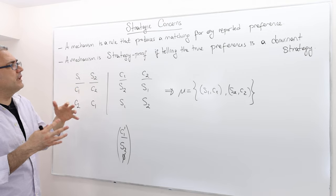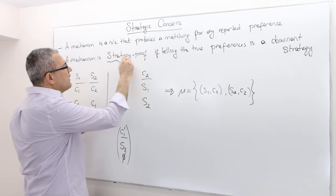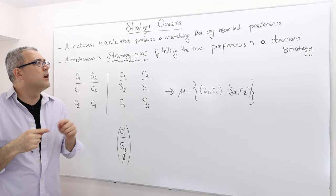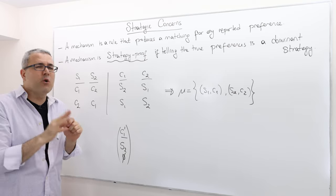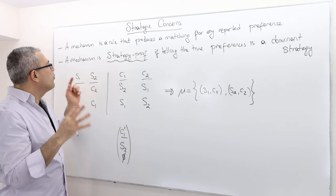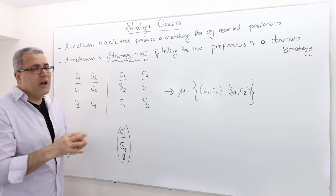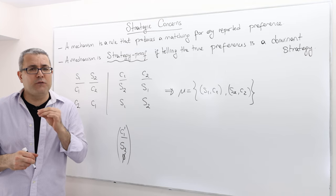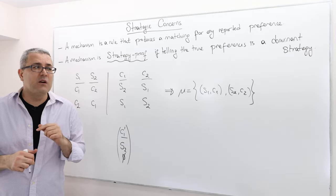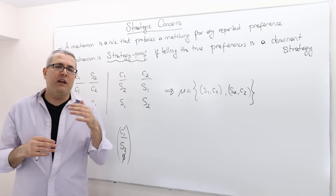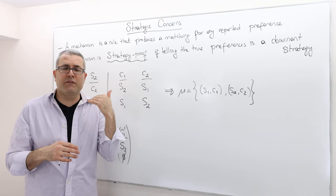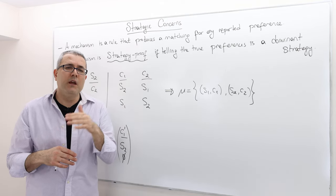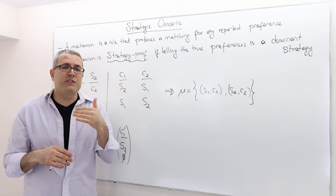A mechanism is strategy-proof — that's a concept we will formally define later when we talk about mechanism design. For now, I'm going to keep it rather informal. We call a mechanism strategy-proof if telling the true preferences is a dominant strategy for each participant. That means, for the mechanisms we keep talking about in matching — for example, the student-proposing deferred acceptance algorithm — each student should ask: